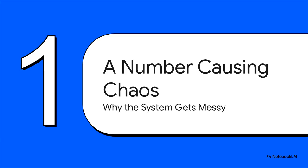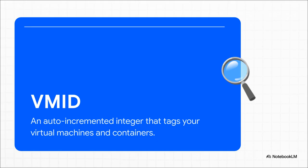So let's get into the nitty-gritty. How does one simple number create so much chaos? It all comes down to how the system was designed and what happens when that design smacks into the messy reality of day-to-day use. What even is the VMID? At its core, it's dead simple — it's just a number that counts up. Your first VM is 100, the next is 101, then 102 and on and on. Sounds clean, logical. But theory is one thing; practice is a whole other beast.